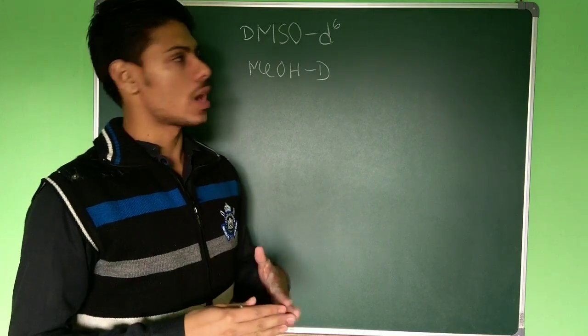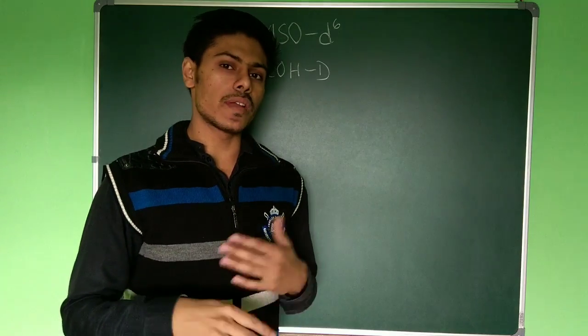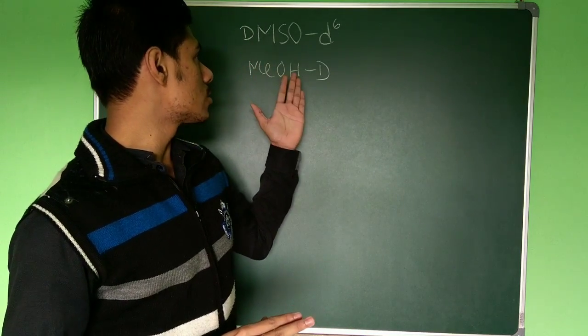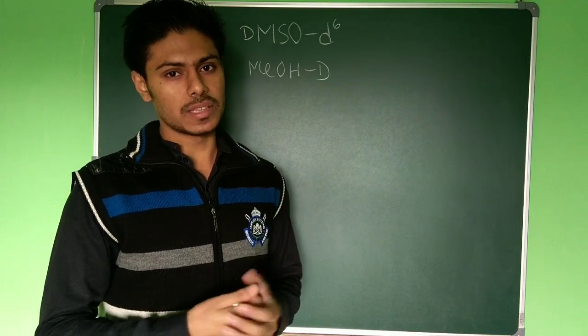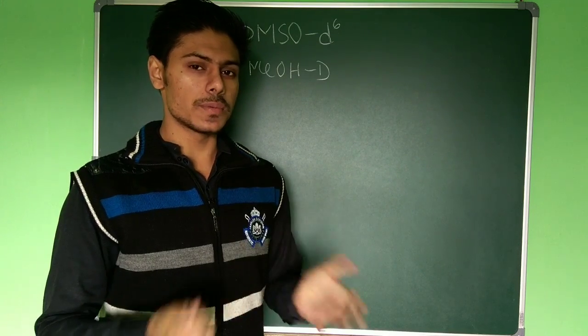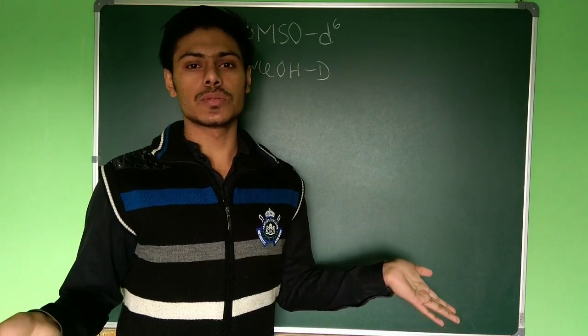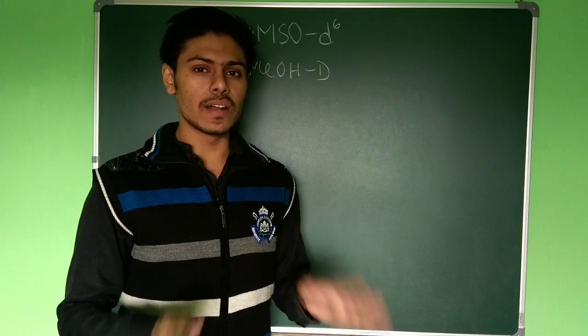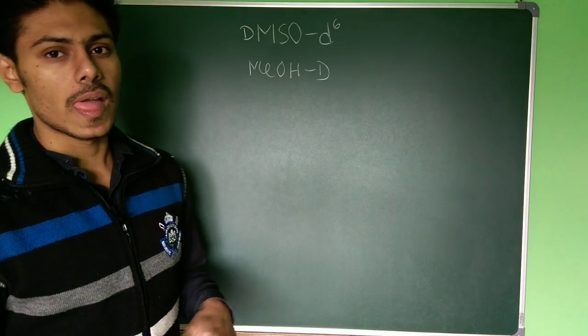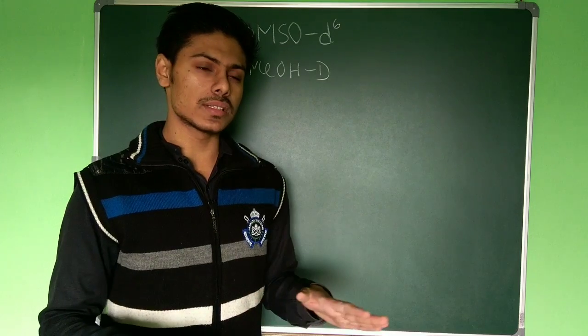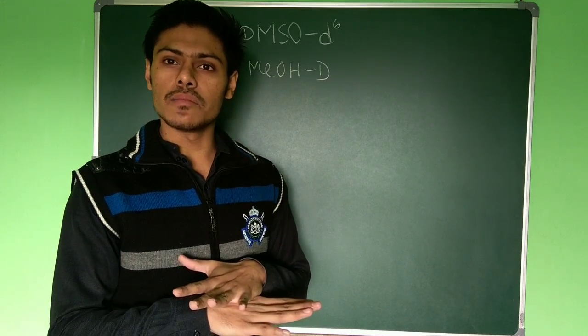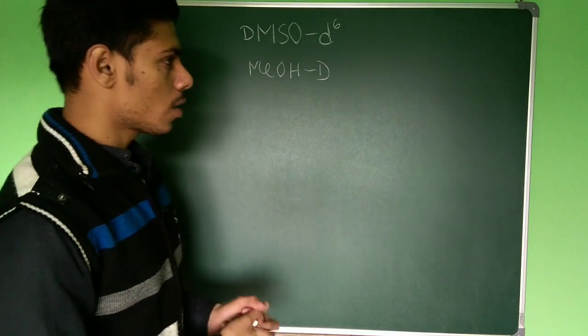This topic is what will be the multiplicity of the signals when you use DMSO-D6 and methanol-D in your NMR sample. If you do NMR, you will know that we use methanol-D and DMSO-D6 and also chloroform-D. These questions are favorite questions for interviewers and also in case of CSIR NET exam this question is asked several times. Many students just don't know what will be the answer or in some cases they are totally unaware of the actual fact.